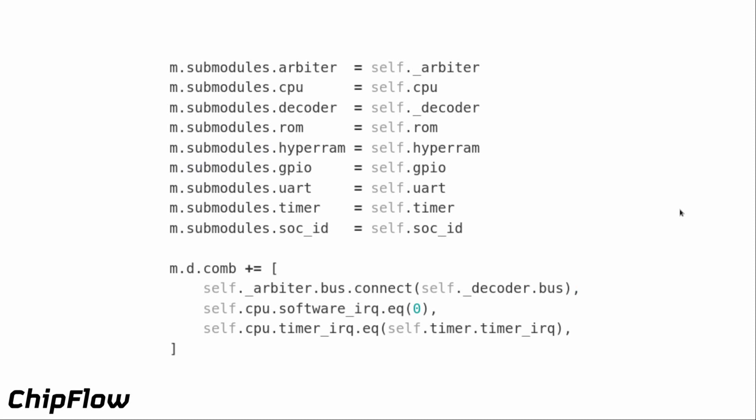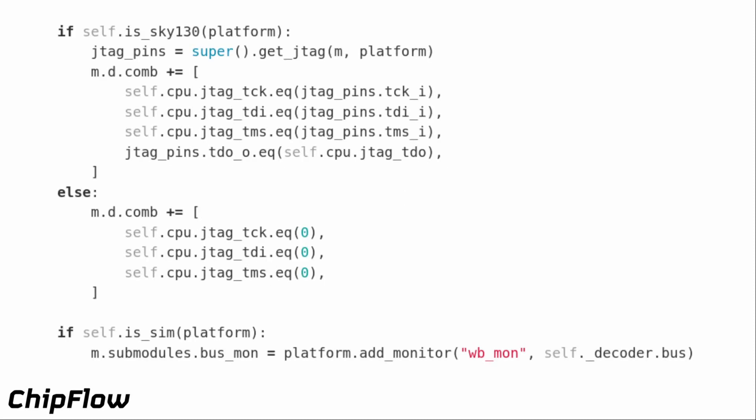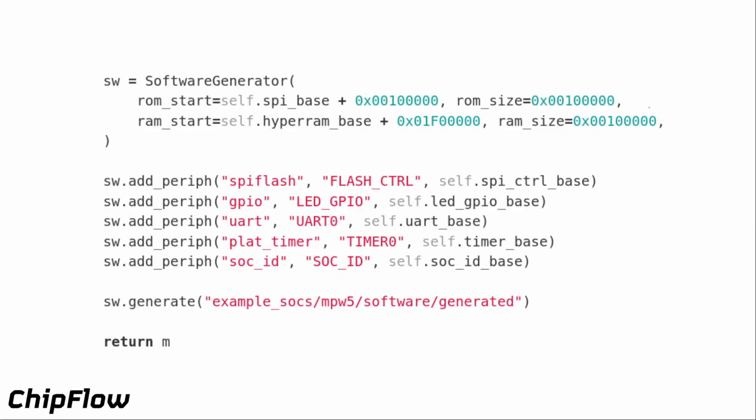We add all the IP cores as submodules and do some simple wiring as combinational logic: connecting the arbiter output to the decoder input, setting software interrupts to a constant zero since we're not using them, and connecting the timer interrupt output to the CPU timer. JTAG is only used in the silicon tape-out, not in FPGA, so we connect that up conditionally. Likewise, the Wishbone bus monitor is only added in simulation. Finally, we have a software generator that produces header files and linker scripts based on the peripheral address constants, which is used to build the simple BIOS bootloader that ultimately jumps into the Linux kernel.